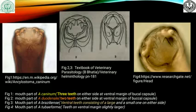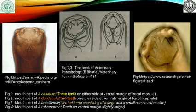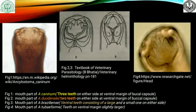You can differentiate all the species on the basis of the morphology of the mouth part. The first picture shows the mouth part of Ankylostoma caninum, which has three teeth on either side at the frontal margin of the buccal capsule. The second picture shows the mouth part of Ankylostoma duodenale, which has two teeth on either side at the frontal margin of the buccal capsule.